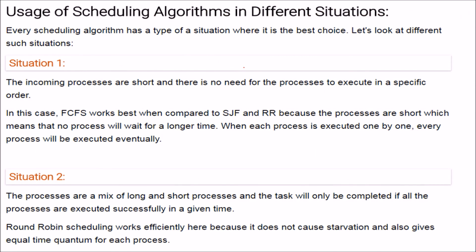When to use which algorithm: Situation 1 — incoming processes are very short and do not need to execute in a specific order. FCFS works best here compared to SJF and Round Robin, because short processes mean no process waits long, and executing them one by one ensures every process completes eventually.